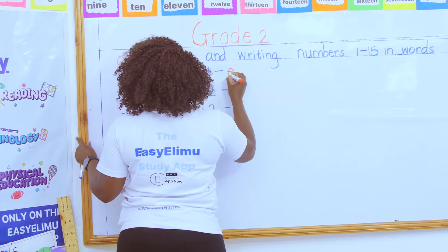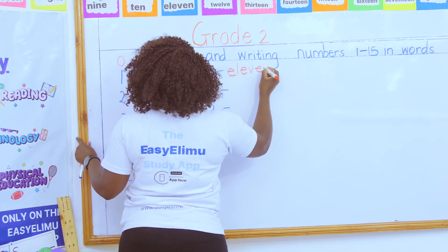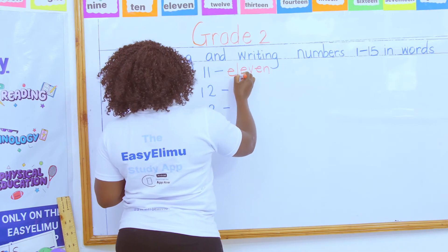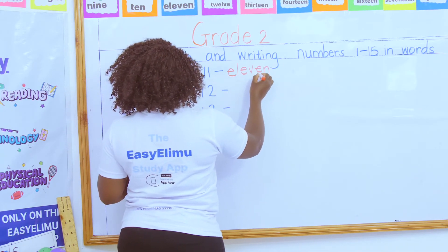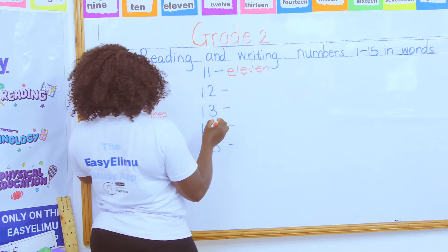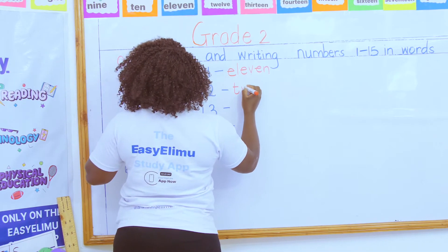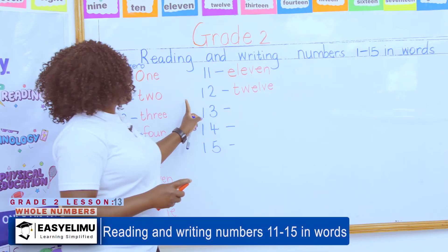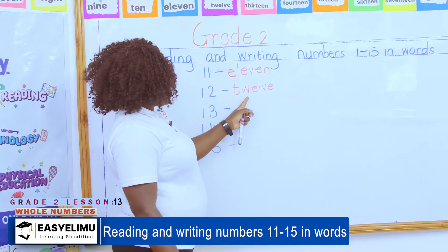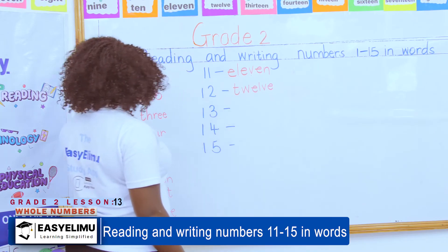Eleven is spelled E-L-E-V-E-N and the figure is 11. Then from the word 'two' we form the word twelve. Twelve is spelled T-W-E-L-V-E.